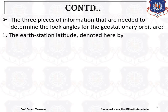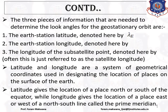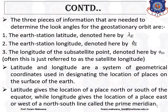With the help of this antenna look angle, we require three pieces of information. The first one is the earth station latitude, represented by lambda_e, where e stands for earth station and lambda stands for latitude. The second is the earth station longitude, represented by phi_e, where phi stands for longitude. The third quantity is the longitude of the subsatellite point, denoted by phi_ss, where ss stands for subsatellite point.